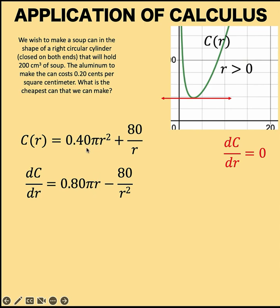Here, π and 0.40 are constants; r is the variable. Now, the derivative of 80 over r equals negative 80 over r², using the power rule of differentiation.